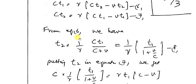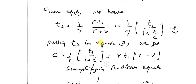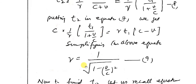From equation 6, we rearrange and factor out t2, giving t2 = (1/gamma) times t1 divided by (1 + v/c) — this is equation 8. Now putting this value of t2 into equation 7 and rearranging and multiplying, we get the value of gamma.